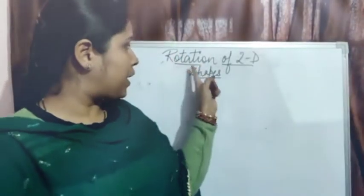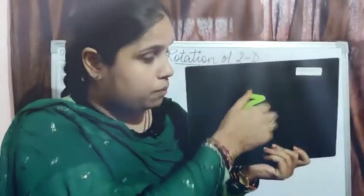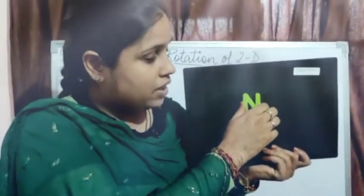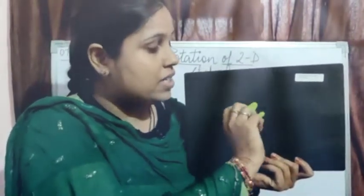Now I will be explaining the rotation of 2D shapes with the help of this magnetic board. I am placing the alphabet N here. I will be rotating this alphabet N in all directions. It can be rotated in two ways: one is clockwise, as the clock moves, and the other is anti-clockwise.